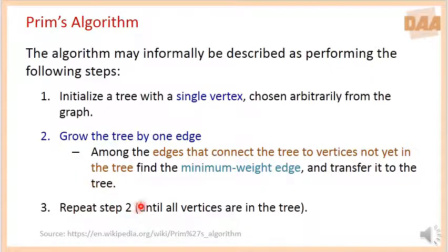Repeat step 2 until all the vertices are in the tree. Suppose if we have n vertices in the tree, we need to repeat step 2 n minus 1 number of times, as minimum spanning tree contains n minus 1 number of edges.